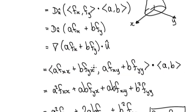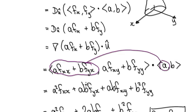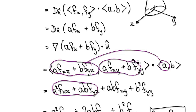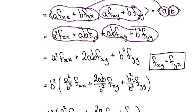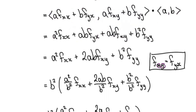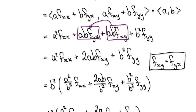So take the dot product: this times this gives this, and then plus this thing here times this gives you this thing here. Then tidy this up. Remember, f_xy is the same as f_yx, so these two are in effect the same — you've got two blocks that are the same. Merge them together, and that would then take us to here.